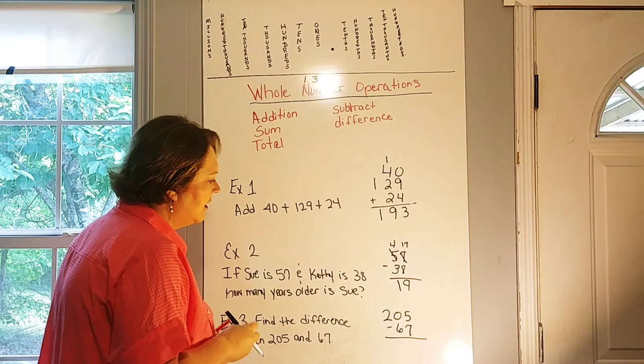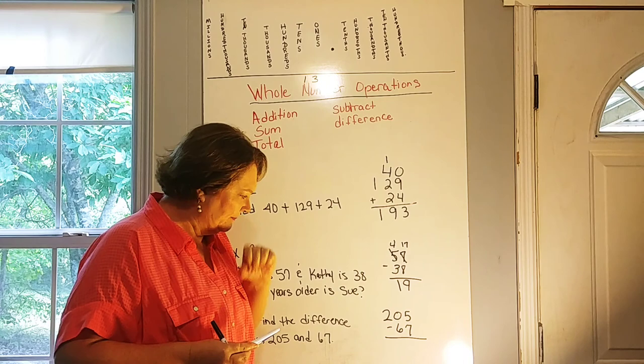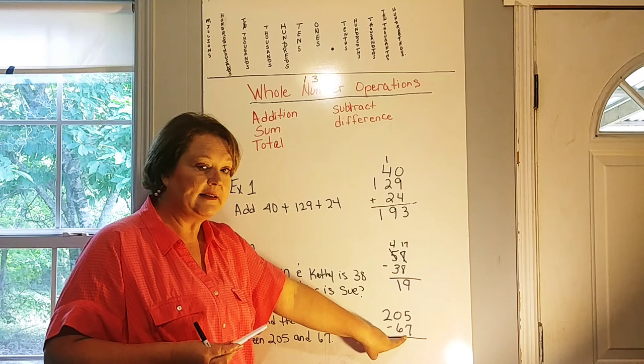All right, so 205 minus 67. All right, so we're looking at this, and this one, oh, a little complicated here, I see. We can't take away seven from five because it's more. We're not dealing with integers here. So we've got to do something.